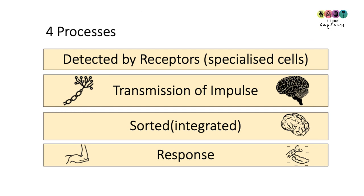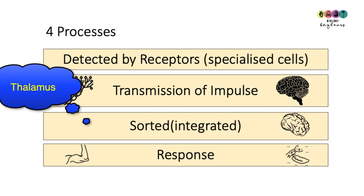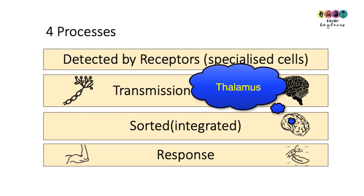Then the impulse. This detection generates an electrical impulse, which is transmitted into the central nervous system. It goes mostly to the brain, to the thalamus, where it gets sorted out.